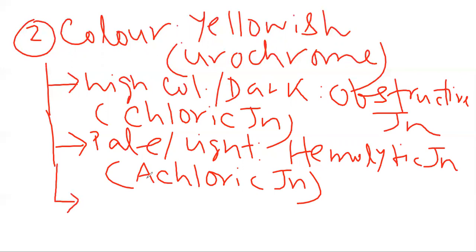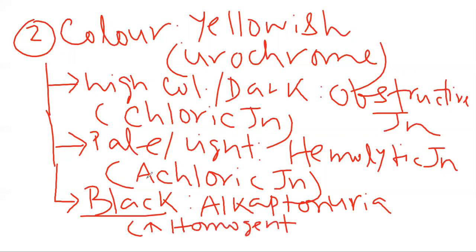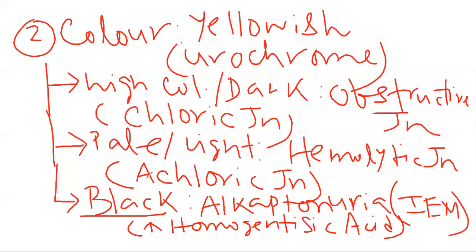Other colors also exist, like black color. Black colored urine mainly occurs in case of alkaptonuria. In case of alkaptonuria disease, if you keep the urine in the light source or under sunlight, it will turn black — because of increased concentration of homogentisic acid. Homogentisic acid increased concentration will lead to black colored urine in case of alkaptonuria, which is a type of inborn error of metabolism, typically seen in children or newborns.